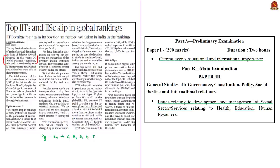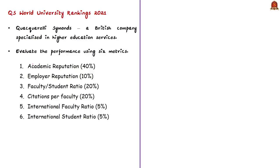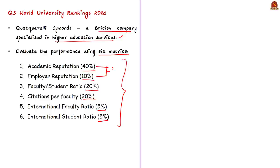QS Rankings, also called Quacquarelli Symonds Rankings, are provided by Quacquarelli Symonds, a British company specializing in higher education services. These QS World University Rankings evaluate university performance using six metrics, with weightages given for reference. Academic reputation and employer reputation are calculated through surveys. The faculty-student ratio assesses the extent to which institutions can provide students with meaningful access to lecturers and tutors — a higher number of faculty members per student reduces the teaching burden on each individual academic.